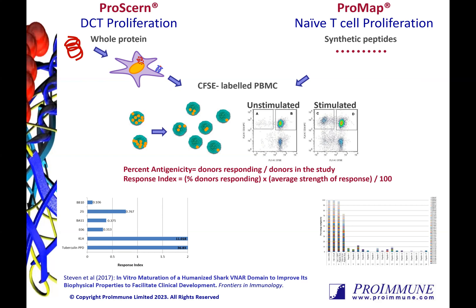In the DCT assay, we generate monocyte-derived dendritic cells and load the antigen at a fixed molar concentration. The DCs are then co-cultured with autologous CFSC-labeled PBMCs. This is a great lead selection tool that allows you to directly compare how each of the therapeutics are processed, presented, and activate the T cells. You can use this to rank your leads, as Elasmogen have done to compare their shark VNAR domains.